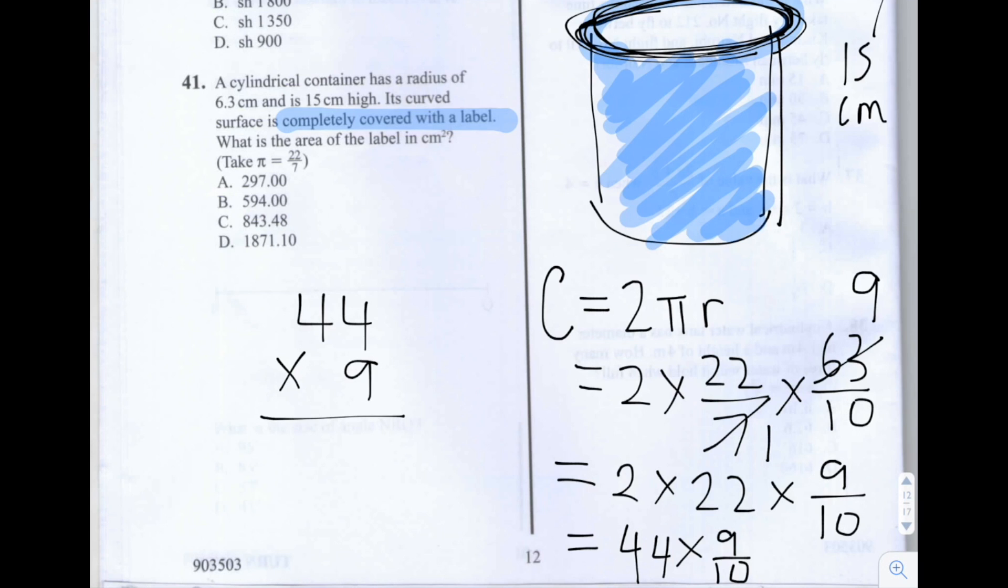So 44 times 9. 4 times 9 is 36. So 6 carry 3. Then 4 times 9 again, 36 add 3, 39. So we get 396.